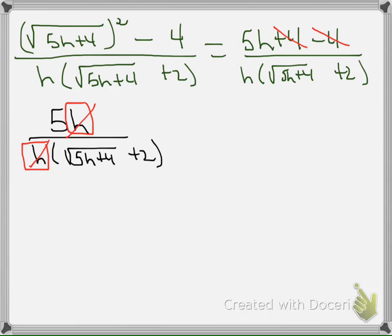So once this is simplified up nicely then this becomes 5 divided by the square root of 5h plus 4 plus 2. And now I'm ready to take the limit and finish the problem.